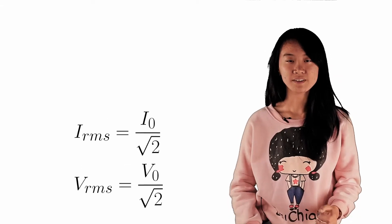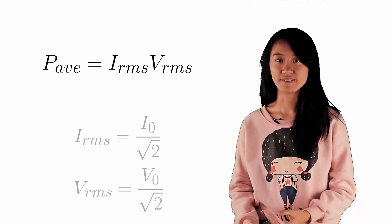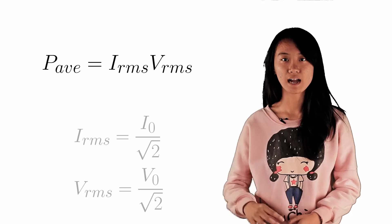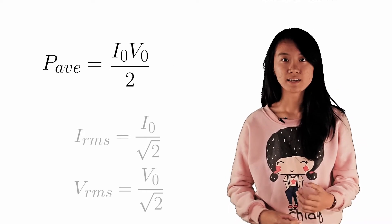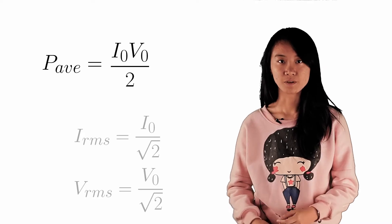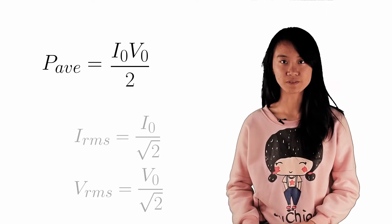Because the average power is simply given by RMSi multiplied by RMSv, we can plug in the RMSi and V values, and you realize that this power is I0V0 over 2, which is simply P0 over 2.